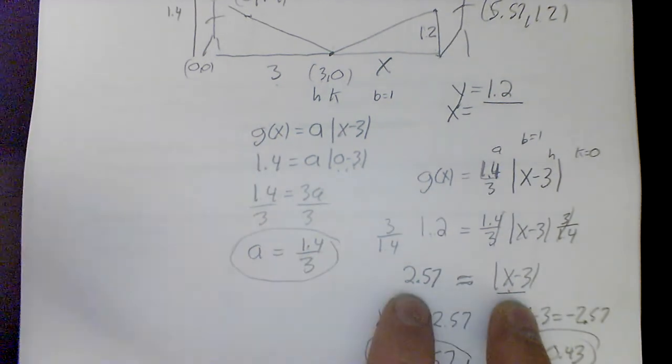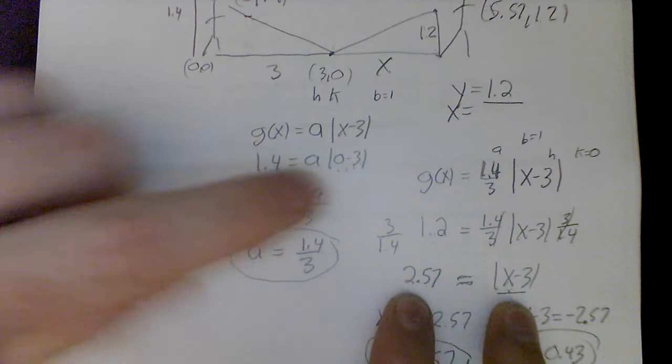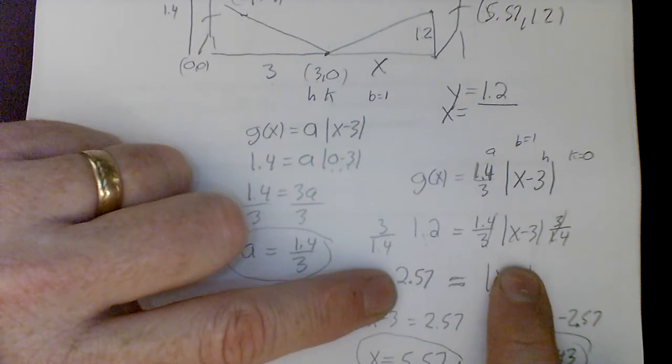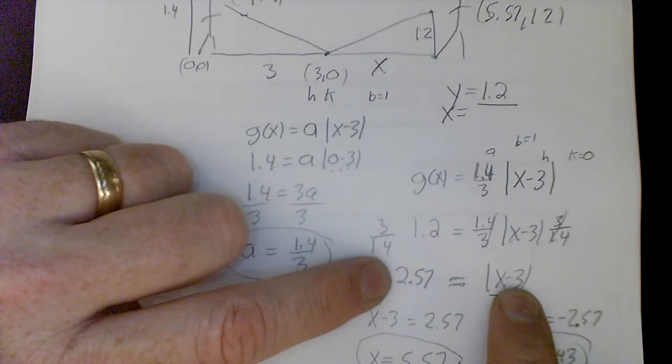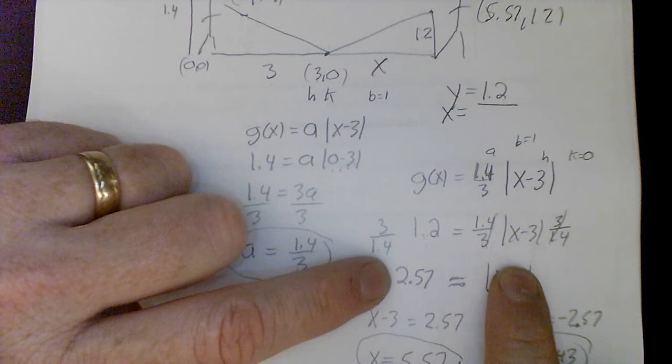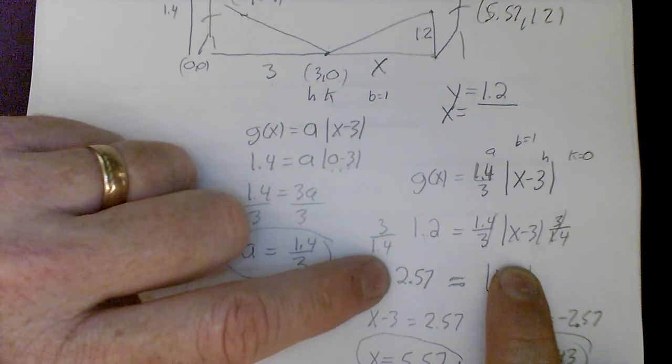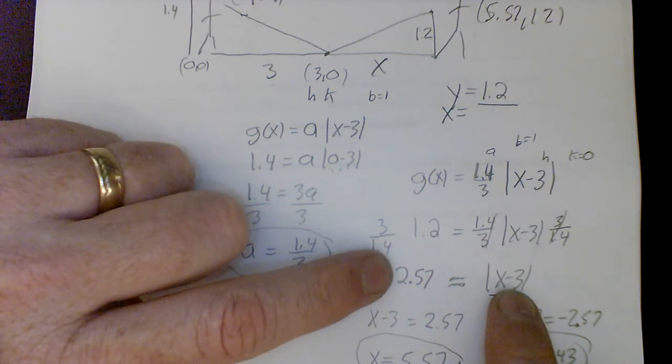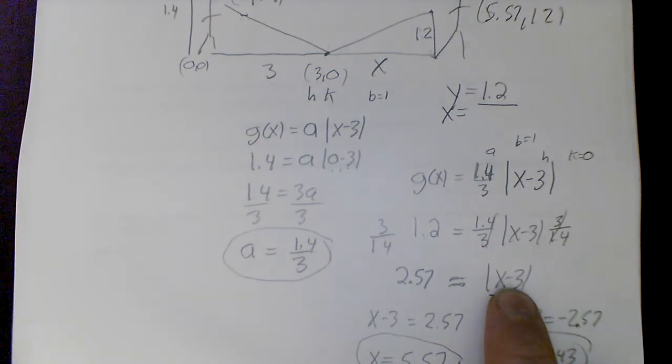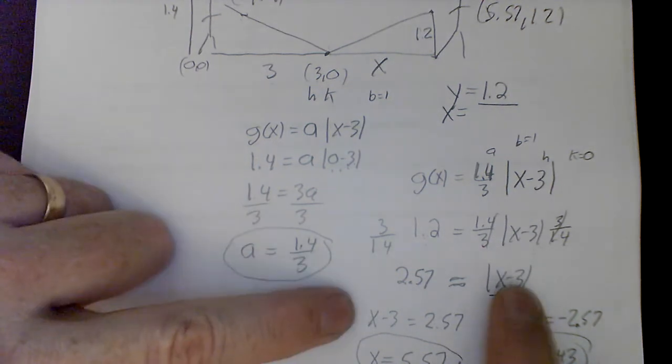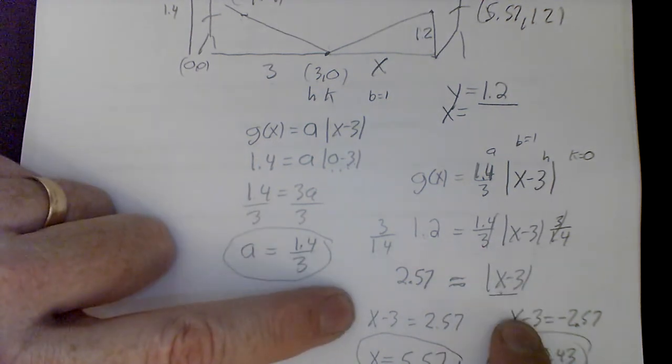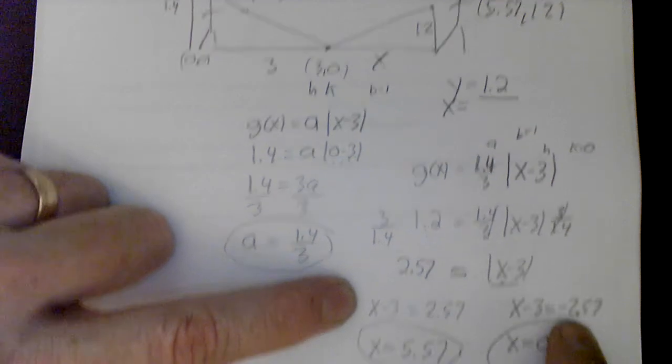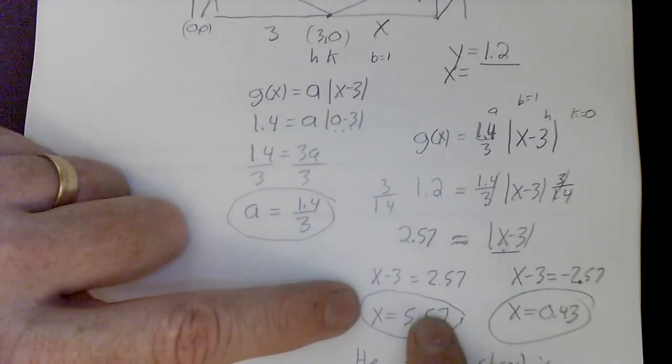There are two answers. If nothing was in there at all, and I plugged in 2.57, that absolute value would be still 2.57. If this x minus 3 wasn't here, and I plugged in a negative 2.57, the absolute value would make it a positive, making the left and right equal to each other. So I have to assume that this x minus 3 could be positive, or this x minus 3 could be negative. You solve both equations by adding 3.